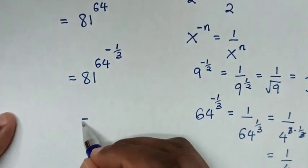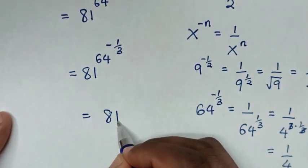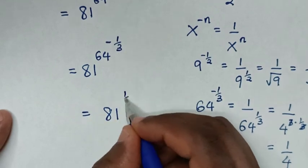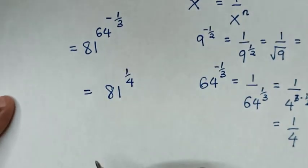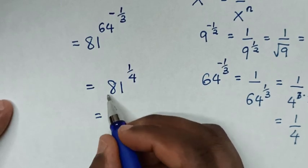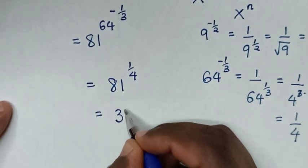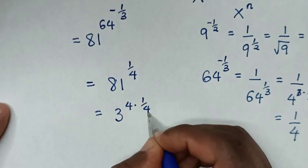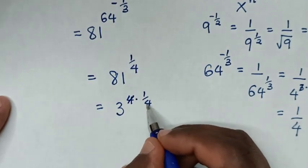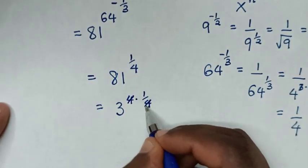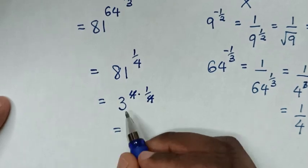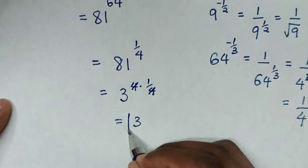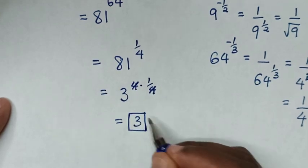Our exponent will be equal to 81, and 64 power of negative 1 over 3 is the same as 1 over 4. So it will be equal to 81, which is the same as 3 power of 4, times power of 1 over 4. To simplify, this 4 and this 4 will cancel. Then it equals 3 power of 1, which is 3. Therefore, this is our final answer.